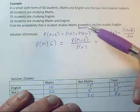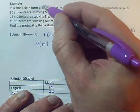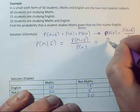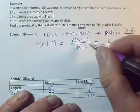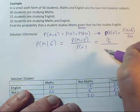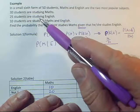It's 10 students. And I know that there are 50 students altogether. So it's 10 50ths, as my probability of maths and English. On the bottom, I just need the probability of them studying English.